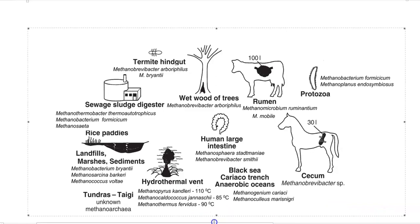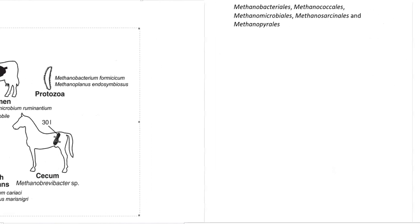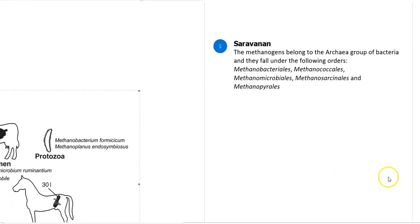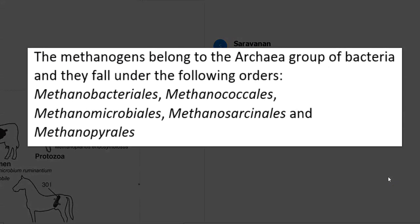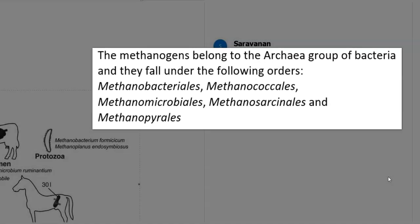On a broader scale, methanogens belong to the domain Archaea and fall into the following orders: Methanobacteriales, Methanococcales, Methanomicrobiales, Methanosarcinales, and Methanopyrales.